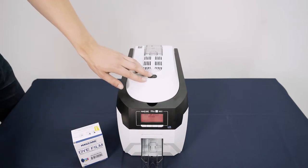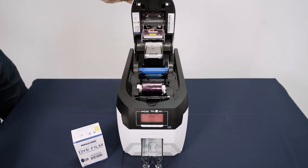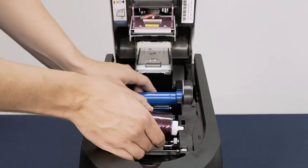Press the button on top of the printer to release the lid. This will reveal the used die film. Remove the die film and discard responsibly.